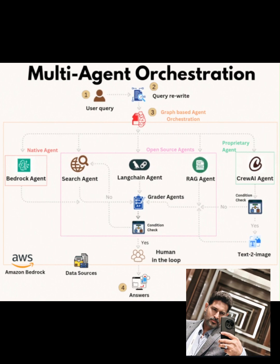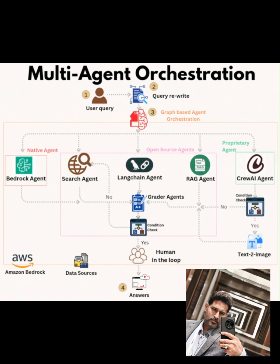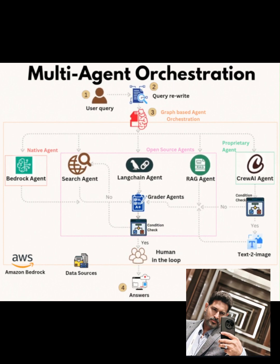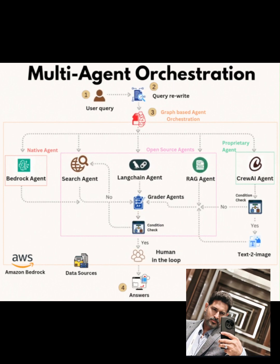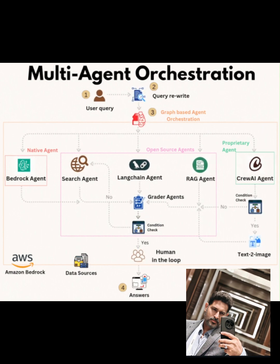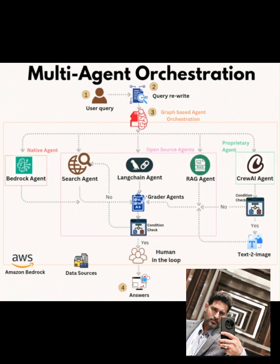Step 3: Graph-based agent orchestration. Now we get to the heart of the process — graph-based agent orchestration. This step involves coordinating multiple AI agents to process the rewritten query using a directed acyclic graph, or DAG, to manage dependencies and workflows. Let's break down the agents involved and how they interact.